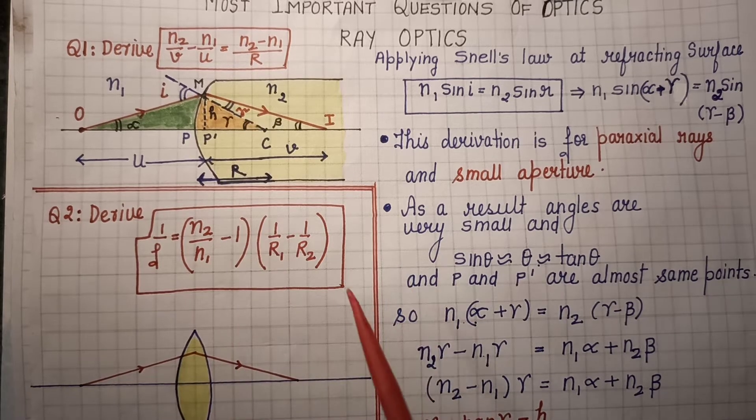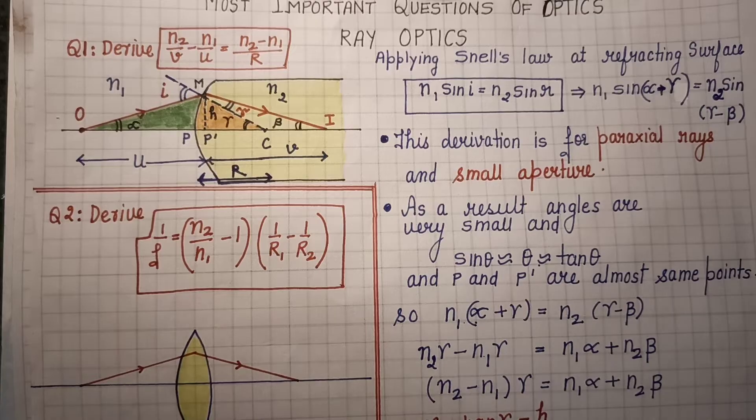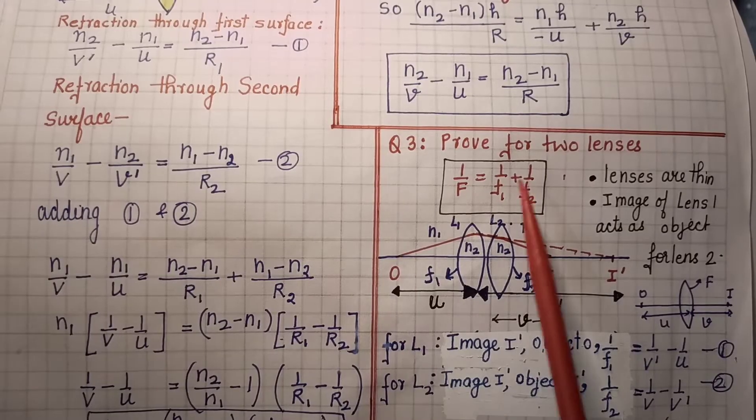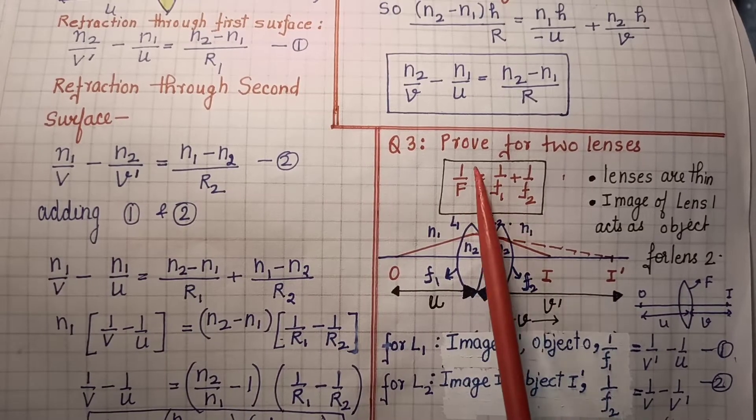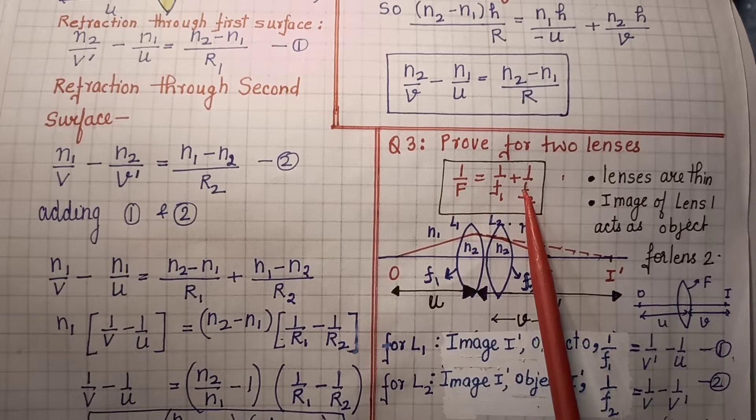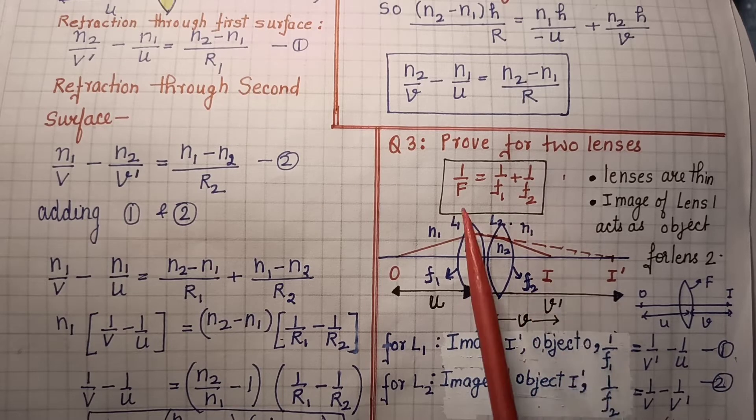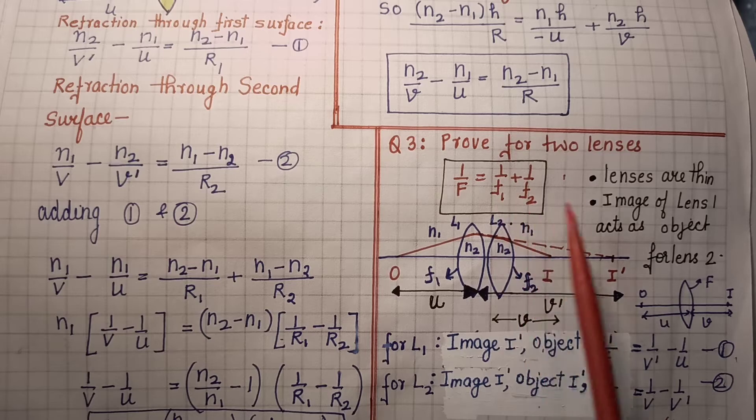The second very important derivation is lens makers formula. Check that you are well prepared with these derivations. The third important derivation of lenses is the derivation of combination of two lenses when their focal length is f1 and f2. Along with it, different types of conceptual questions are also asked that I will address in the next video. In this video I will just talk about the important derivations of optics.